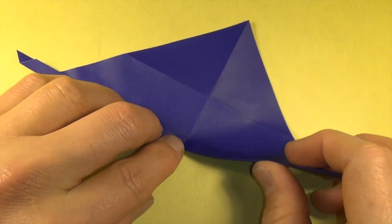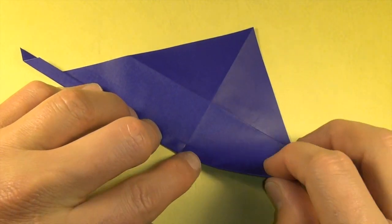Now we're going to fold the water bomb base. So we're going to fold this edge up to the middle crease.